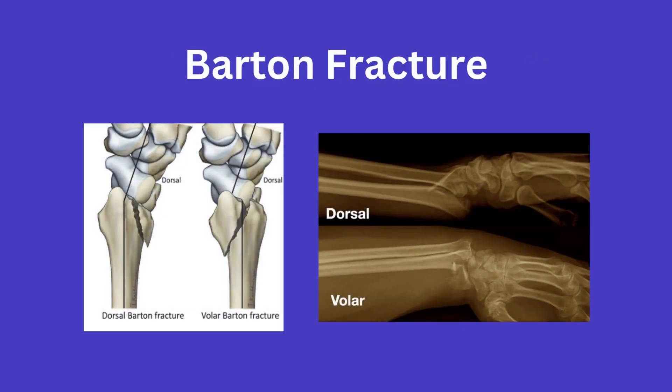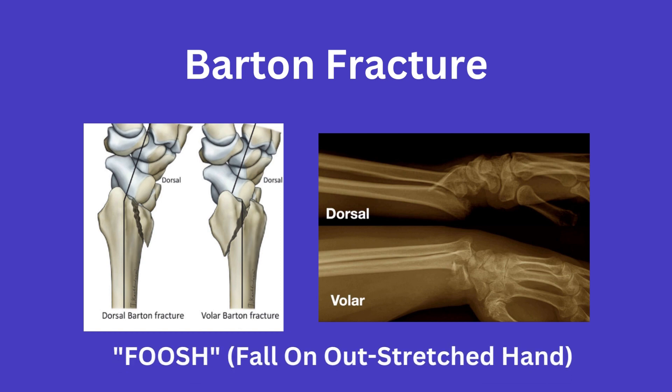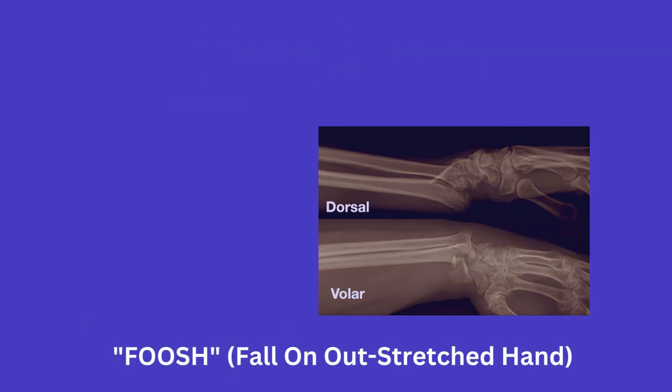Next you have the Barton fracture — a dislocation of the radiocarpal joint with an intra-articular fracture involving the volar or dorsal lip. A recent study said 70% of these occurred in young male workers or motorcyclists. However, they are also commonly seen in those with osteoporosis who sustain a FOOSH injury — a fall on an outstretched hand.